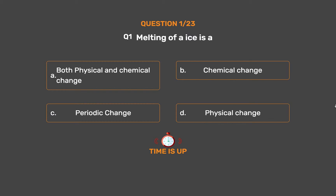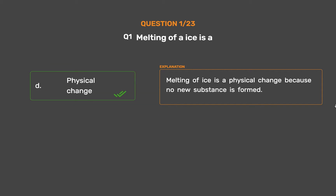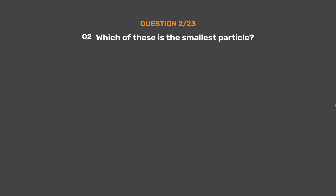The correct answer is Option D: Physical change. Melting of ice is a physical change because no new substance is formed.